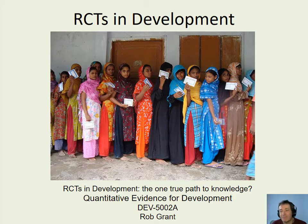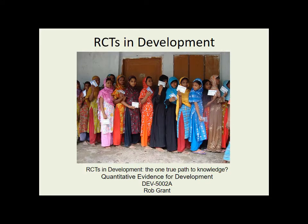That's what this lecture is about — randomised controlled trials and development. The picture I'm starting with here is a picture of an RCT carried out in India, where marriage is illegal when you are under 18 but still common in many areas. The girls here have been told that as long as they remain unmarried and under 18, they'll be entitled to a free jerry can of cooking oil each month. These girls have brought signed certificates to say that they're still unmarried, and they're going to collect their free cooking oil. We'll look now at the method behind this.